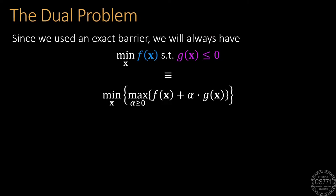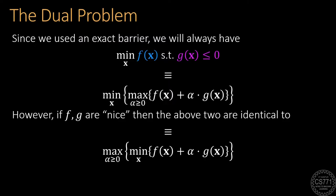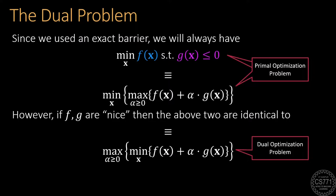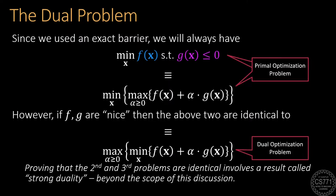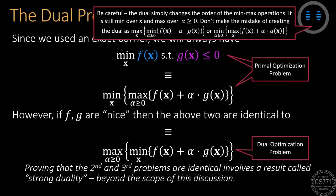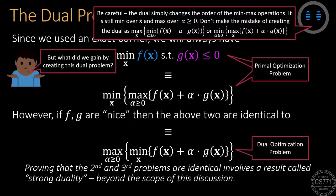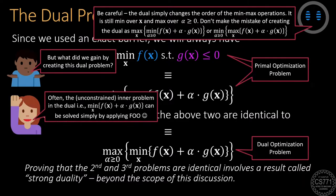A common way to solve the min-max problem over the Lagrangian is by creating something called the dual problem. Our discussion has convinced us that the original problem is exactly equivalent to the min-max problem over the Lagrangian since we used an exact barrier function. However, if the objective and constraint functions are nice, the problem remains unchanged even if we switch the order of min-max to make it a max-min problem. This max-min problem is called the dual problem, while the original min-max form is called the primal. Proving equivalence between primal and dual is beyond the scope of this discussion.